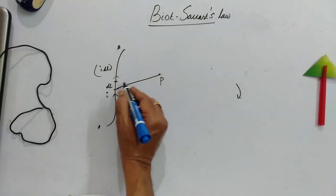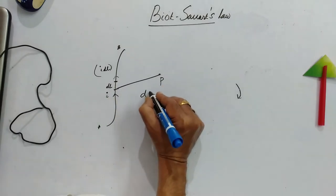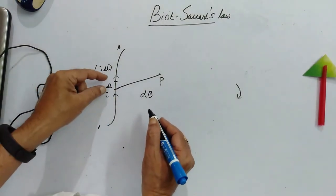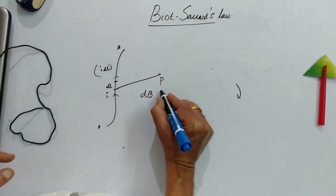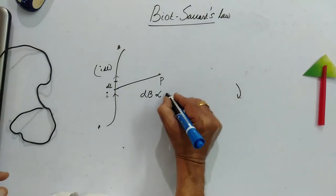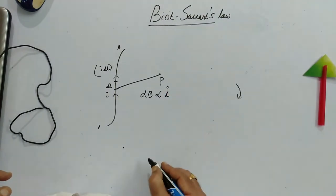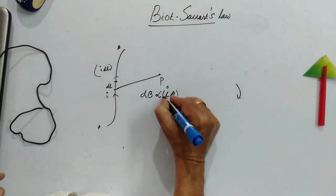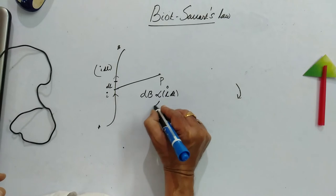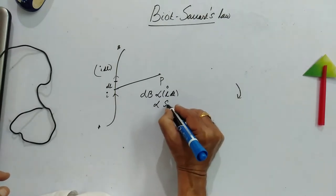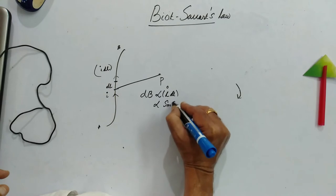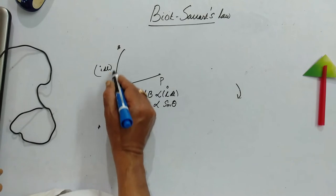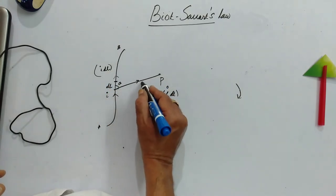Now if you calculate that magnetic field which is generated through this small dL element is practically observed directly proportional to sin theta. What is the angle theta? Theta is the angle between the current element and the radius vector.